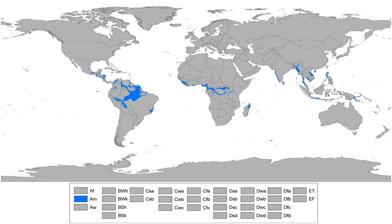The second variation features extraordinarily rainy wet seasons and pronounced dry seasons. This variation features pronounced dry seasons similar in length and character to dry seasons observed in tropical savanna climates. However, this is followed by a sustained period, or sustained periods, of extraordinary rainfall. In some instances, up to and sometimes in excess of 1,000 mm of precipitation is observed per month for two or more consecutive months. Tropical savanna climates generally do not see this level of sustained rainfall.